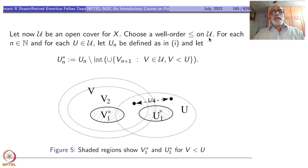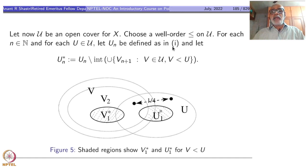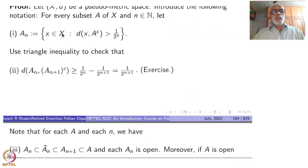Let U be an open cover for X. We want to extract a locally finite open refinement. Choose a well-ordering on U — by the Axiom of Choice every set can be well-ordered. For each n in N and each U in U, define Un as An applied to U: the set of all x in X such that the distance of x from the complement of U is bigger than 1/2^n.